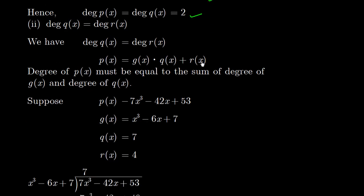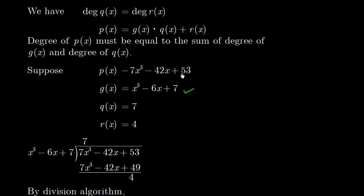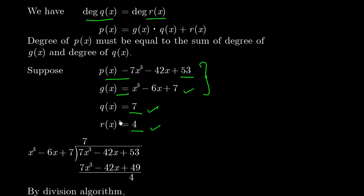Now the second part of this question is: degree of Q(x) should be equal to degree of the remainder R(x). This means that when we divide, the quotient and remainder should both have the same degree. So degree of Q(x) should equal degree of R(x). This happens when the dividend and divisor both have the same degree. The degree of P(x) must equal the sum of the degrees of Q(x) and G(x).